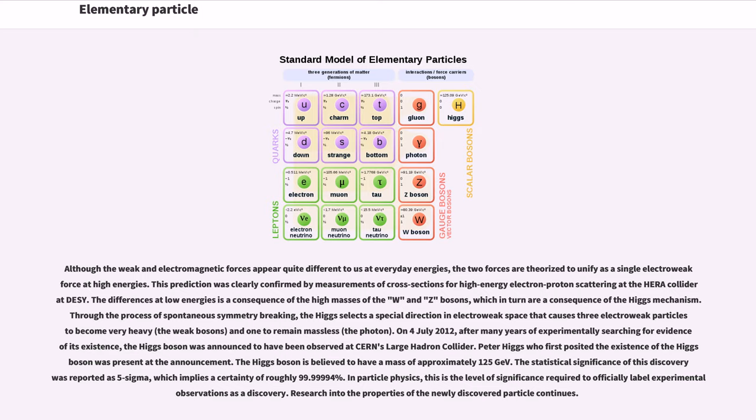On July 4, 2012, after many years of experimentally searching for evidence of its existence, the Higgs boson was announced to have been observed at CERN's Large Hadron Collider. Peter Higgs, who first posited the existence of the Higgs boson, was present at the announcement. The Higgs boson is believed to have a mass of approximately 125 GeV.